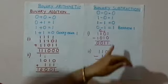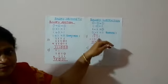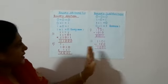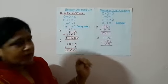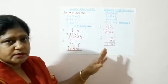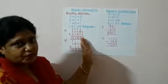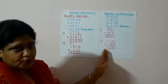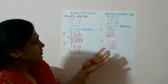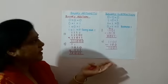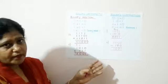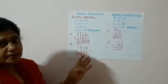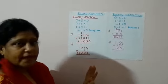So, this is how binary subtraction is to be done. Now children, after completing this in your copies, you can practice more numbers using binary addition and binary subtraction. You can get more familiar with binary arithmetic, how to do addition and subtraction. Thank you, children.